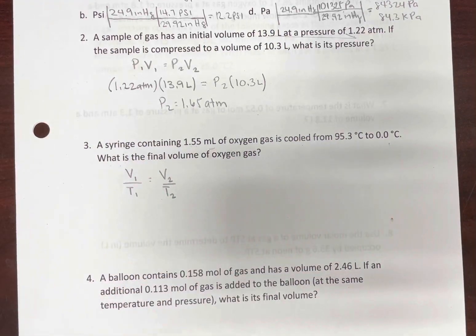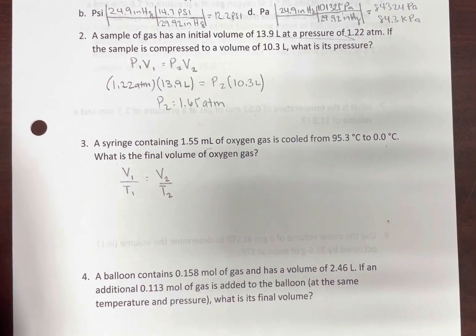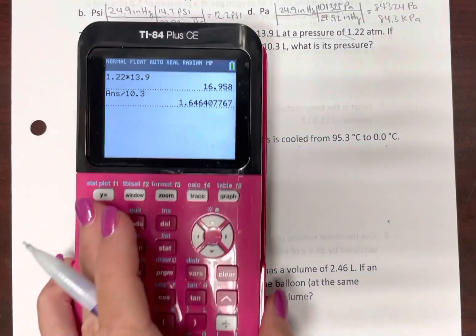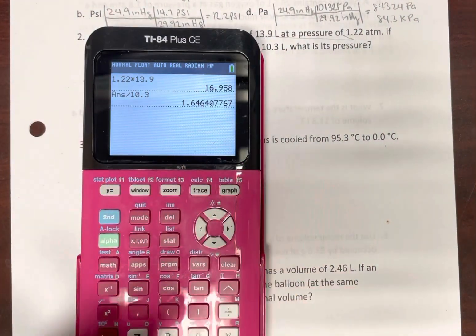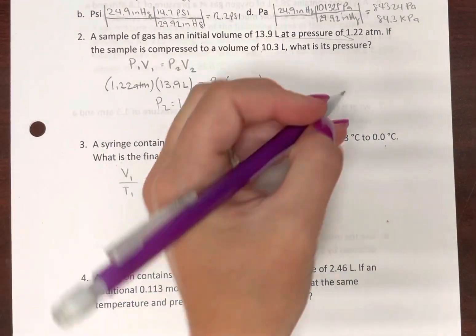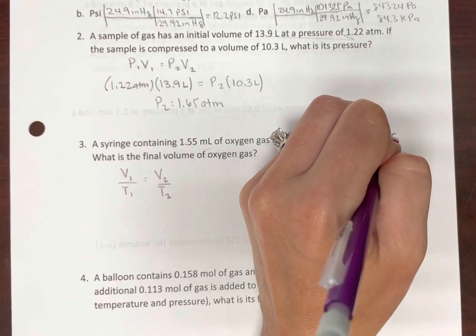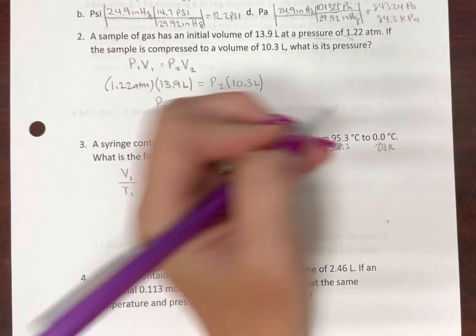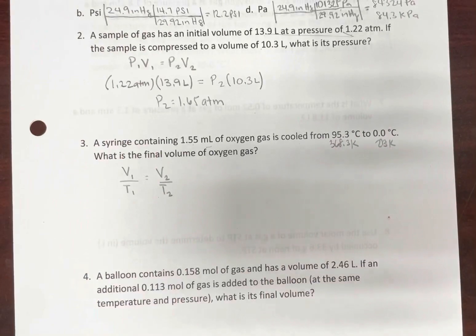Again, the units for volume don't have to be in liters. Now, what do we know about gas laws and temperature? We always, always, no exceptions, must be in Kelvin. Negative temperatures are not allowed. So let's make the conversion: 95.3 plus 273 equals 368.3, and zero Celsius equals 273 Kelvin. Okay, so make sure you convert to Kelvin. That's an easy way to mess things up.